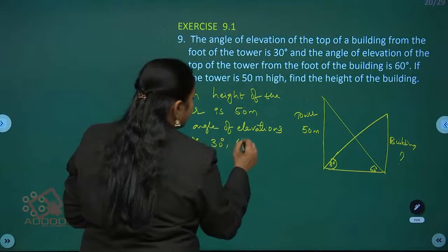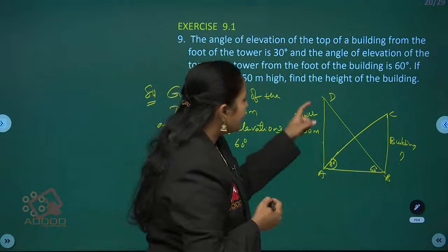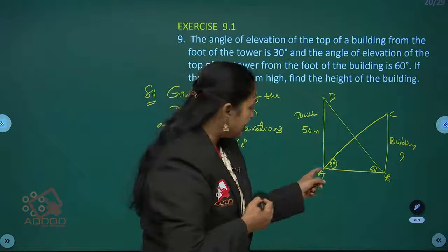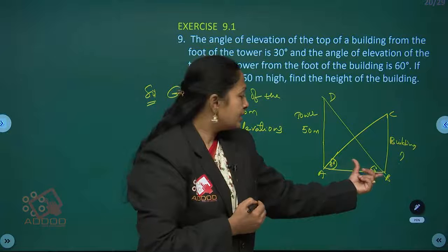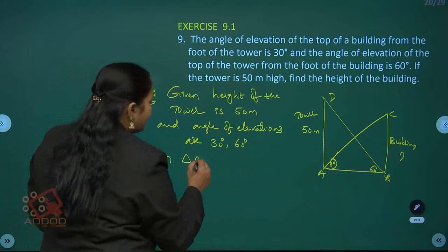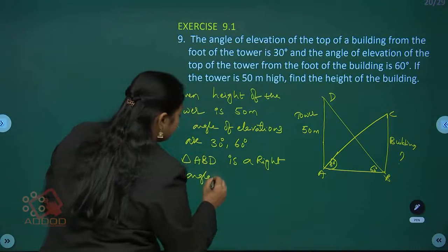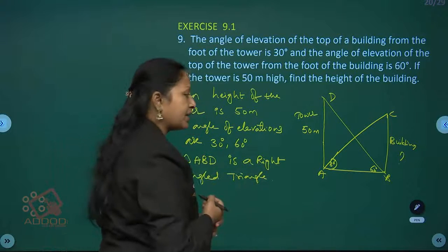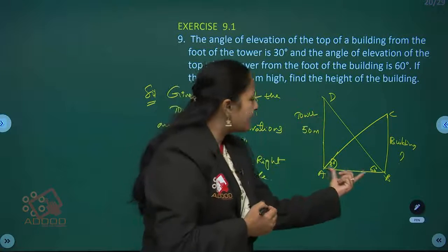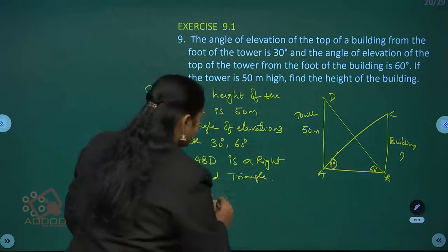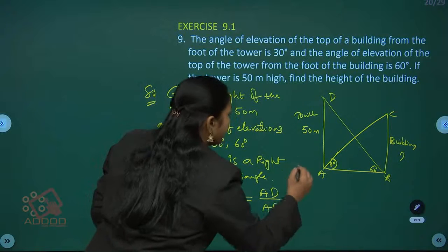The angle of elevations are 30 degrees and 60 degrees. Give labels A, B, C, D. Triangle ABD is a right-angle triangle, right angle at A. The opposite side of 60 degrees is 50 meters, so we can find the adjacent side of 60 degrees. In triangle ABD, choose a trigonometric ratio involving the opposite side and adjacent side for 60 degrees — let's take tan 60 degrees. Tan 60 degrees equals opposite side AD divided by adjacent side AB.